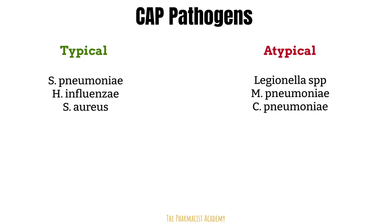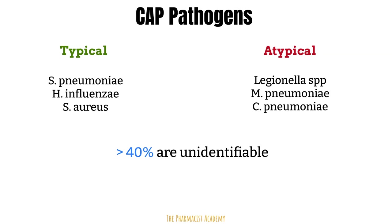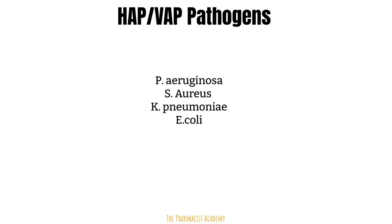Despite these different pathogens, over 40% of CAP pathogens are unidentifiable. Common HAP and VAP pathogens include Pseudomonas, Staph aureus, Klebsiella pneumoniae, and E. coli.